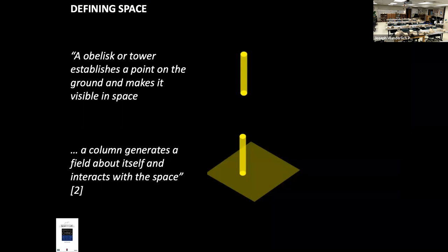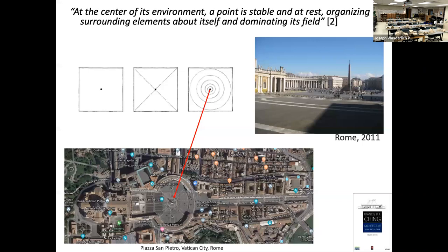Now, in architecture theory, defining space — we talk about a tower or an obelisk as establishing a point on the ground. It makes itself visible in space and generates a field about itself. At the center of its environment, a point is stable and at rest, organizing surrounding elements. It's a field.